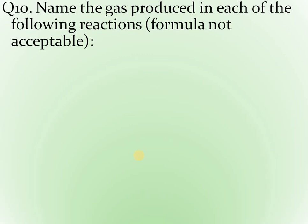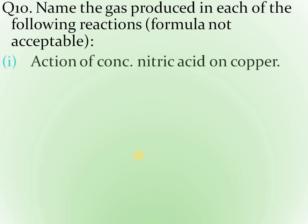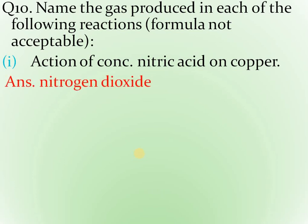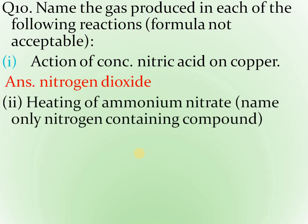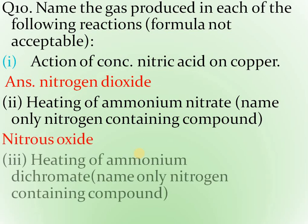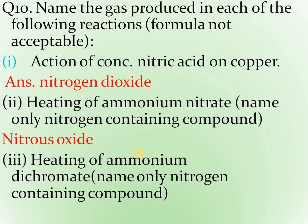Name the gas produced — note: formula is not acceptable, write the name only. Action of concentrated nitric acid on copper produces nitrogen dioxide. When dilute is used, NO (nitric oxide) is produced. Ammonium nitrate on heating gives N2O — nitrous oxide, also called laughing gas. Heating of ammonium dichromate — which gas? Nitrogen. Ammonium dichromate on heating gives nitrogen gas. This question was there in ninth class also.